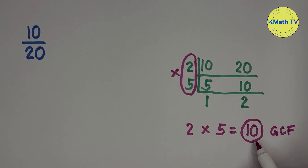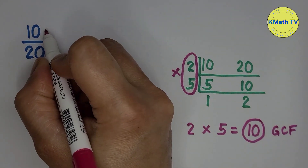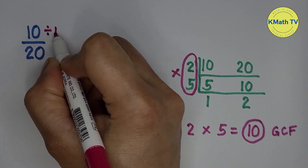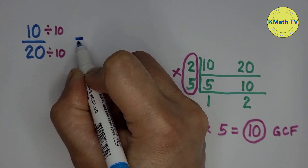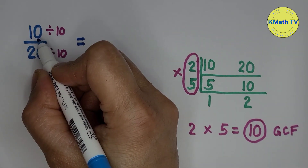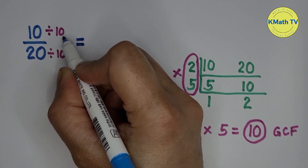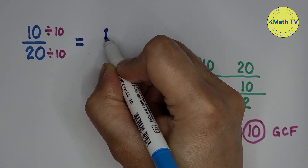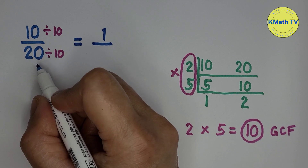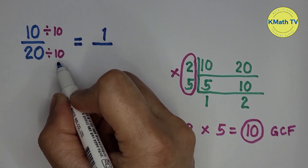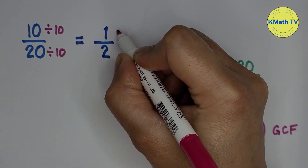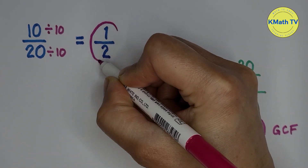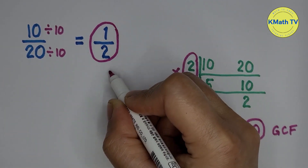Now let's use this GCF to reduce the fraction to lowest term. We will divide the numerator and the denominator by the GCF, 10. 10 divided by 10 equals 1, and 20 divided by 10 equals 2. The lowest term of 10 twentieths is 1 half.